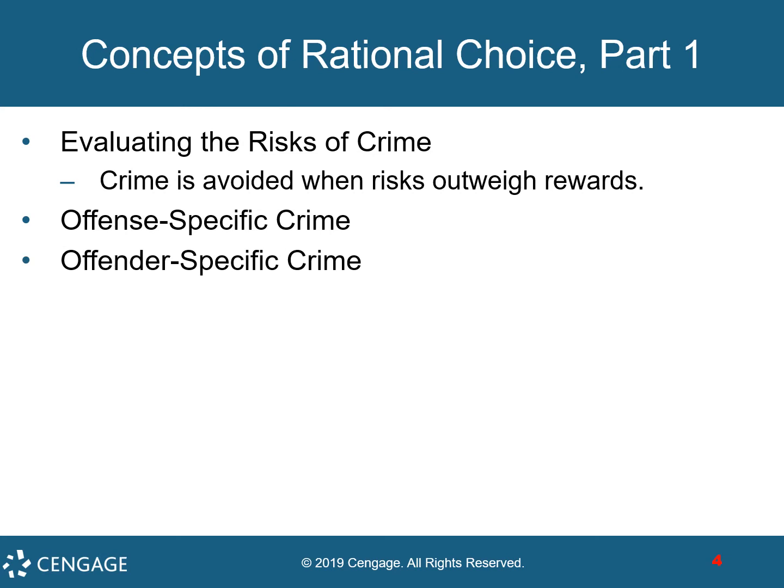Rational choice theory holds that criminals engage in careful thought and planning, evaluating the risks of crime. If the rewards are high and the perceived risk is small, crime is likely. There is also offense-specific crime, where the offender reacts selectively to characteristics of a specific criminal act, and offender-specific crime, where offenders assess whether they have the personal needs, skills, and prerequisites to commit successful criminal acts.